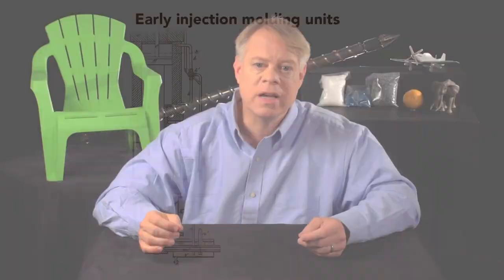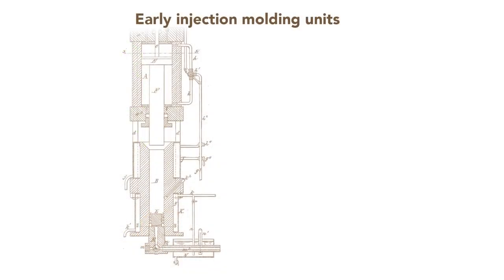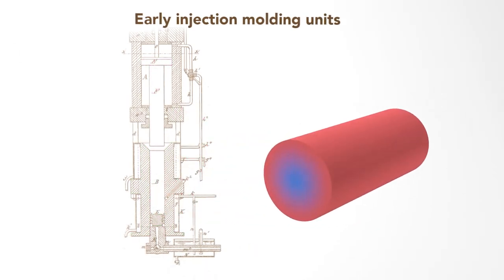Before the mid-20th century, injection molding machines used only external heating of the barrel to melt the plastic before a plunger injected the molten material. But because plastic conducts heat poorly, the temperature was uneven in the barrel. Either the middle was too cool and not fully melted, or the outer regions were too hot and degraded the plastic.